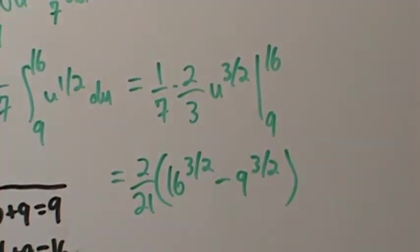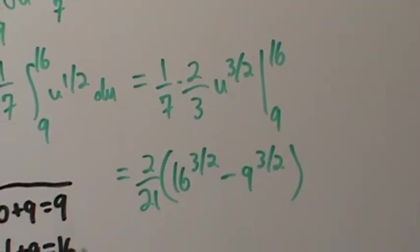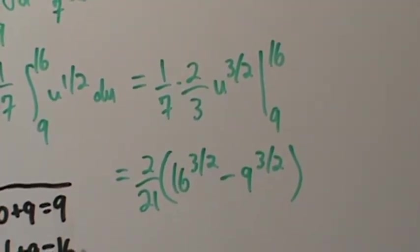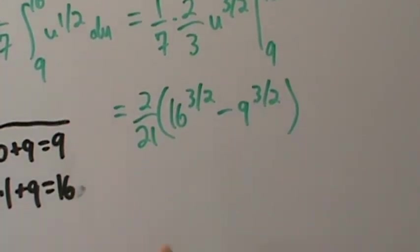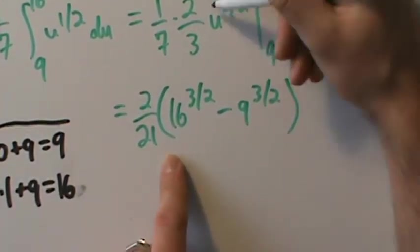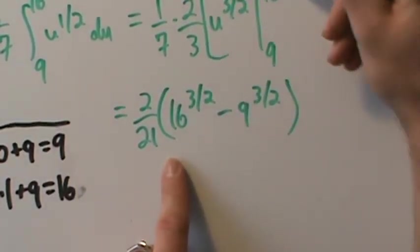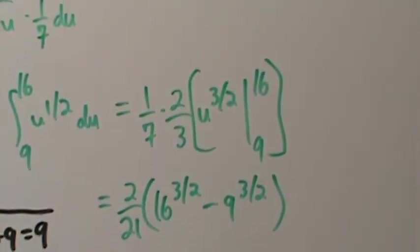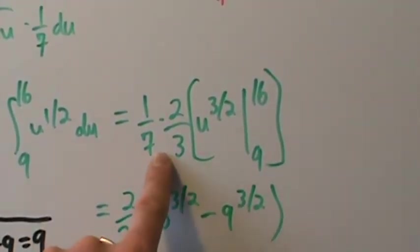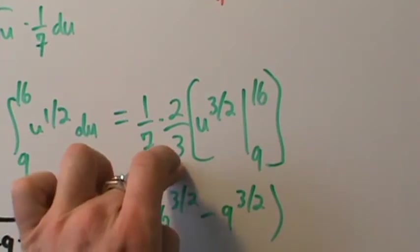The constant multiple 2/3 is technically in there but we can pull it out. These parentheses represent the evaluation — it's really just subtraction, so we can pull the 2/3 out and evaluate u^(3/2) from 9 to 16.